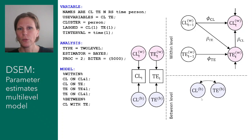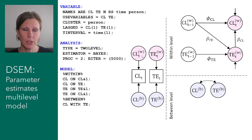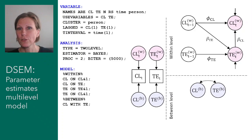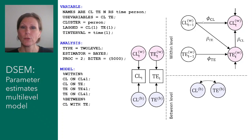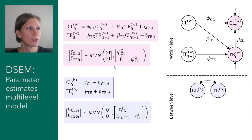These between-person components can then be further modeled at the between-person level. There's also a temporal deviation at every occasion from this mean for every person separately, referred to as the within-person component. These are then modeled at a within-person level, where we can have regressions — for instance, closeness right now is regressed on tension experienced today, and we can also have the lagged relationship.